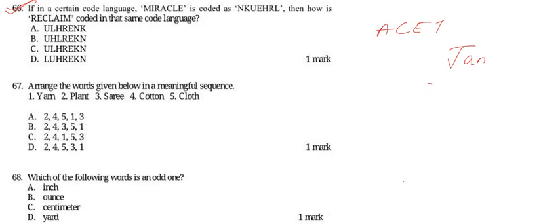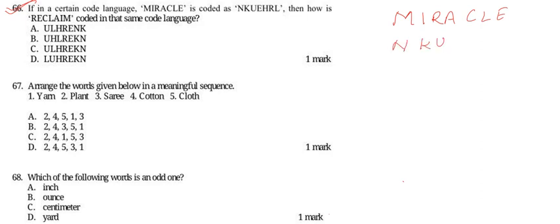Question 67 says: in a certain code language, 'miracle' is coded as 'NKUEHRL'. How is 'reclaim' coded in that same code language? So let us write: we have 'miracle' coded as 'NKUEHRL', mapping M→N, I→K, R→U, A→E, C→H, L→R, E→L.